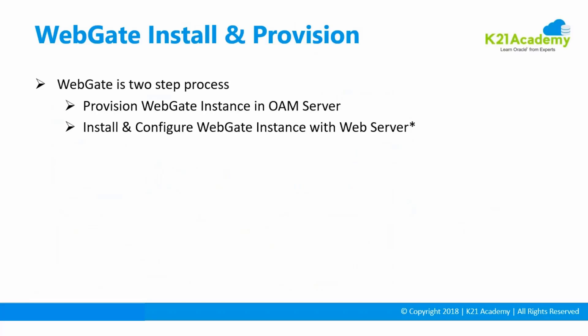It's a two-step process. First, you provision a WebGate instance in Oracle Access Manager. You go and create an instance of WebGate in Oracle Access Manager - either through the console by going to the agents and creating the instance, or you can run RREG. When you do that, everything happens on the Oracle Access Manager side. There's nothing happening on the client side, which is your web server.